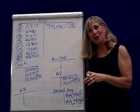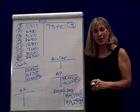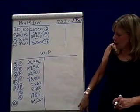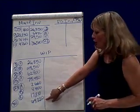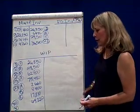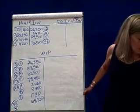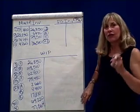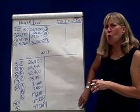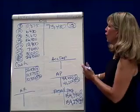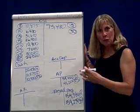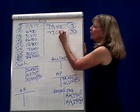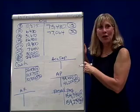Whenever we incur labor costs, we apply some overhead. The overhead rate is 120% of direct labor. Going back to our Work in Process account — if direct labor is $64,220, also on the 30th, we're going to be debiting Work in Process for 120% of that, which is $77,064. The credit is Overhead. So we're applying overhead on the 30th: debit Work in Process, credit Overhead for $77,064.